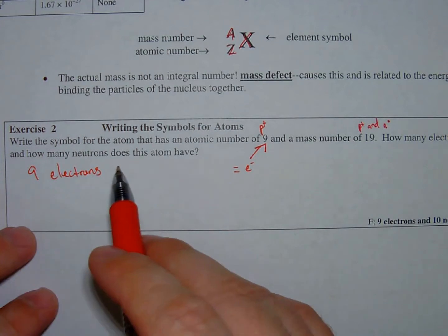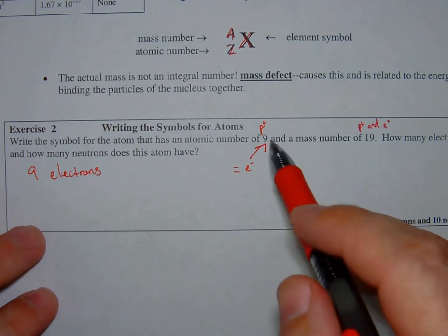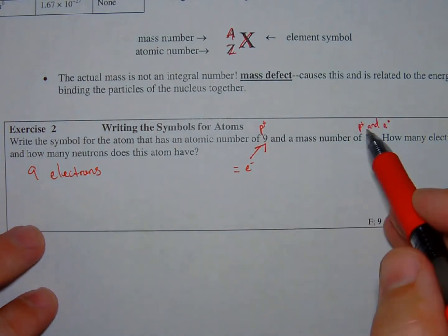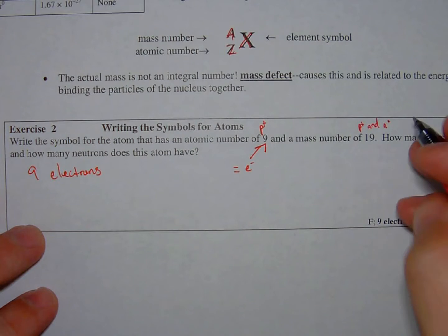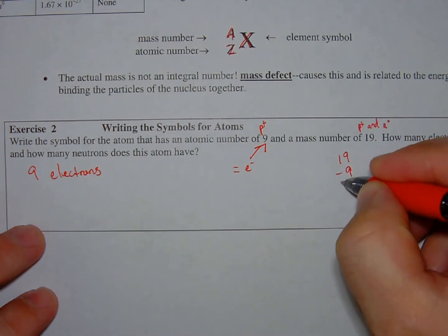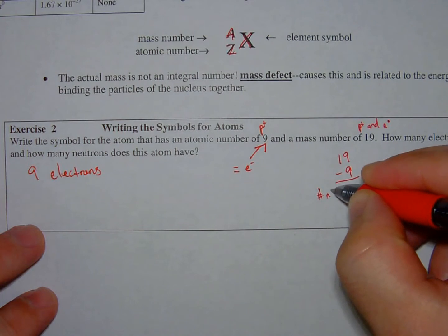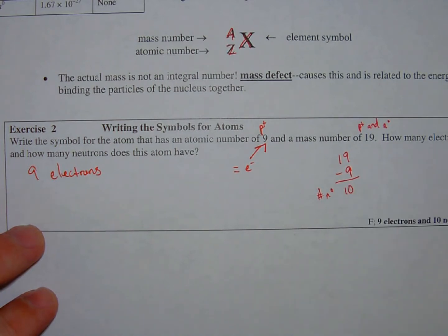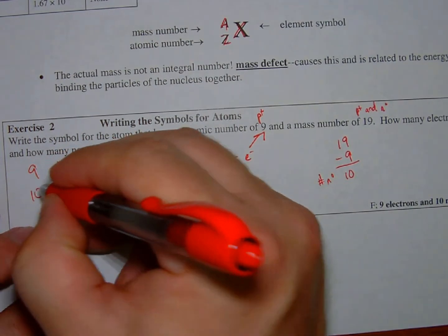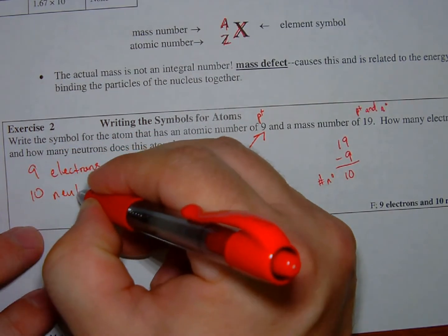How many neutrons does this atom have? Well, remember, this is the number of protons. This is the number of protons and neutrons. So I will take the number of protons and neutrons, subtract the number of protons, and so I'll have only the number of neutrons here. So that'll be ten. Ten neutrons.